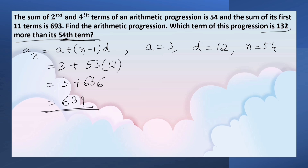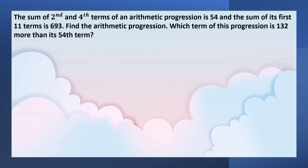So the 54th term is 639. The term which is 132 more than this term is 639 plus 132, which equals 771. So we have to find out which term equals 771.